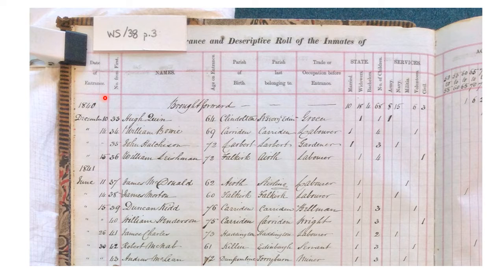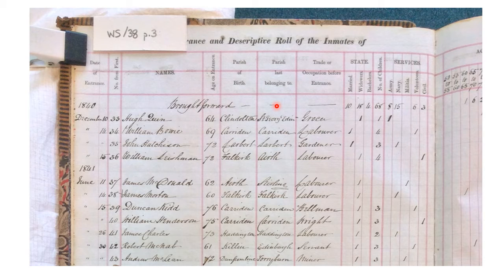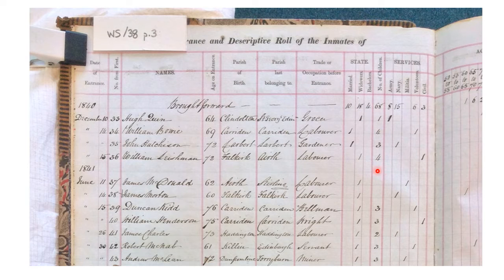As well as the basic information we already have — such as the patient's name, when they were admitted, and the patient number — there's new information too. As well as recording the parish of birth, we now also get information recording the parish the patient was last to belong to, so where the patient was living prior to being admitted to the asylum. We've also got a set of columns under the heading 'state, number of children and services,' which provides information on whether the patient was married, widowed or a bachelor, the number of children, and then a simple list of whether the patient was army, navy, militia, volunteer or civil.